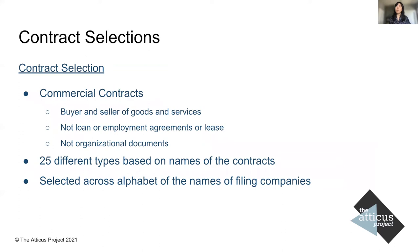The contracts in the QUAD dataset come from EDGAR, a publicly available dataset maintained by the US Securities and Exchange Commission. EDGAR contains material contracts and other specified contracts that every publicly traded company in the US — or foreign filers listed on US stock exchanges — are required to file. The contracts in QUAD version one are all commercial contracts, meaning contracts where a buyer and seller exchange goods or services for money. They are not organizational documents like articles of incorporation, nor employment agreements, loan agreements, or leases — commercial contracts represent the largest category of contracts overall.